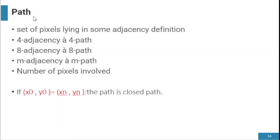Path relationship is a simple concept: if pixels are 4-adjacent they form a 4-path; if 8-adjacent, an 8-path; and M-adjacency forms an M-path. If the starting point (x0, y0) equals the ending point (xn, yn), the path is closed.